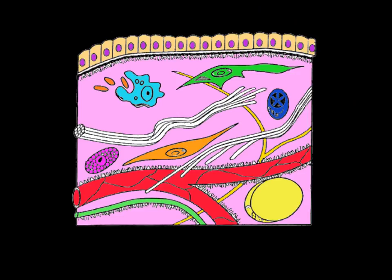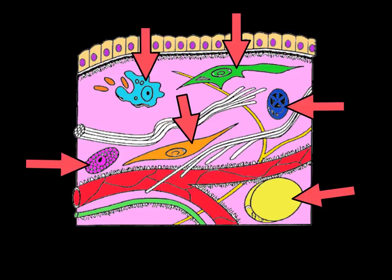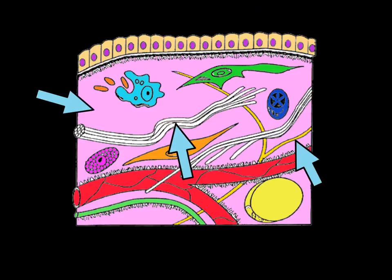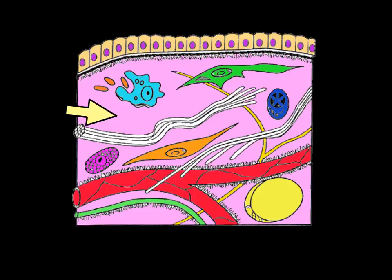Let's look at an illustration of connective tissue and see if we can clarify its composition. Connective tissue is made up of cells and extracellular matrix. Extracellular matrix is made up of protein fibers, organic ground substance — the stuff found between cells and fibers — and fluid in which cells and fibers are suspended.